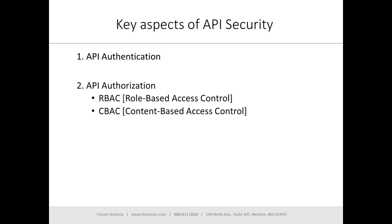The second part of the API security paradigm is authorization — you know who they are, but what can they do? That's comprised of two key sub-components. You're probably familiar with RBAC, role-based access control, based on the role of the user. But in API security, you also need to bring in the content, the payload, the information — content-based access control alongside role-based access control — to give you the contextual way to provide authorization decisions on APIs.